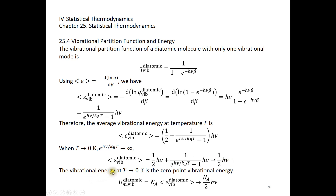The vibrational energy at zero K is the so-called zero-point vibrational energy. Zero-point means the lowest possible, so zero-point vibrational energy means the lowest possible vibrational energy, which is just one-half h nu.